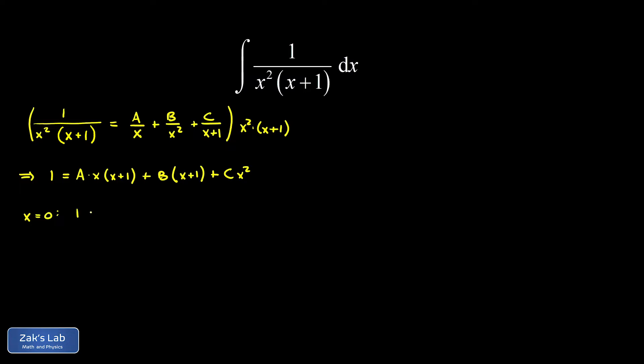The left-hand side of the equation stays the same, that's just the number 1. When we sub in x equals 0, the a and c terms vanish. This leaves us with b times 0 plus 1, which is just b. So we immediately get b equals 1.